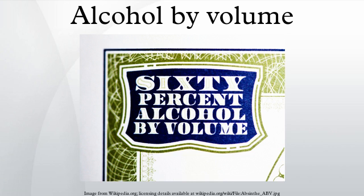Alcohol proof: another way of specifying the amount of alcohol is alcohol proof, which in the United States is twice the alcohol by volume number, while in the United Kingdom it is 1.75 times the number. For example, 40% ABV is 80 proof in the US and 70 proof in the UK.